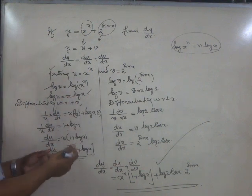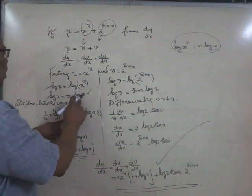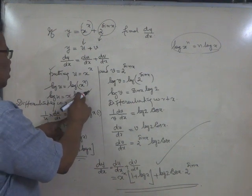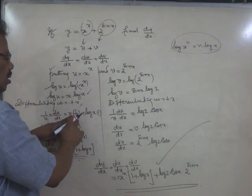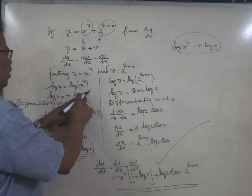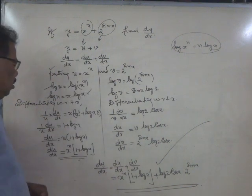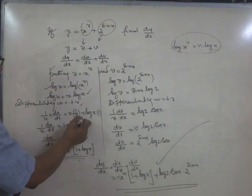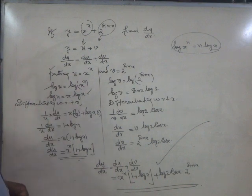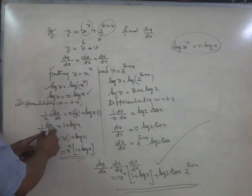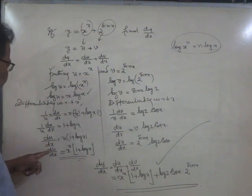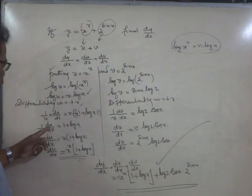Apply the product rule: first function into derivative of the second — that is, log x derivative is 1 by x — plus second function log x into derivative of the first, which is 1. So 1 by u into du by dx is equal to 1 plus log x.